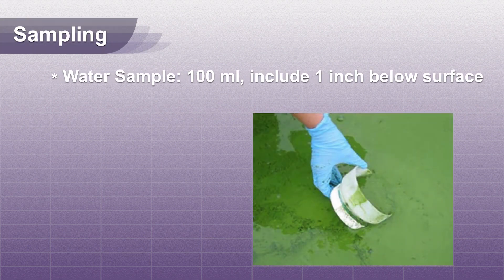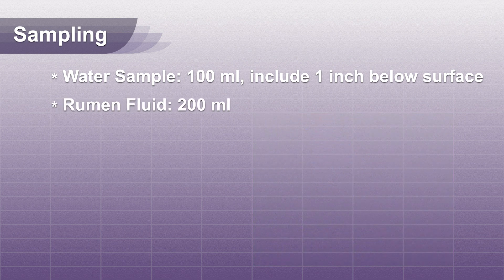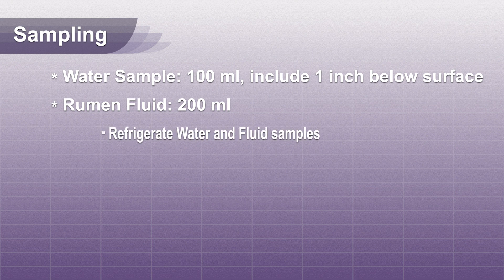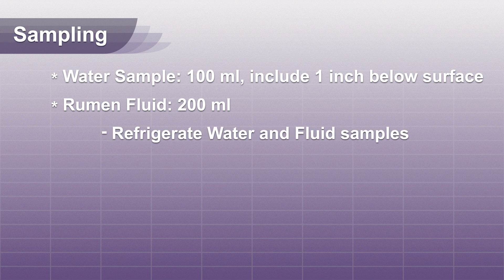Sampling: Collect a water sample of at least 100 ml, including the water one inch below the surface. When collecting water, gloves should be worn as some cyanobacteria produce dermatotoxins. Also collect a rumen fluid sample of at least 200 ml. Both water and rumen fluid samples should be refrigerated before shipping. Do not freeze, as this will lyse the cyanobacteria.